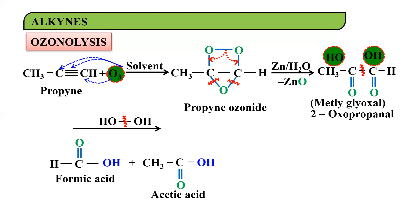Unlike KMnO₄, which is a stronger oxidizing agent and can convert formic acid into CO₂ and water, H₂O₂ is not that strong, so it stops at the carboxylic acid stage.